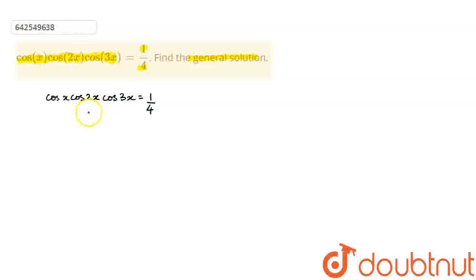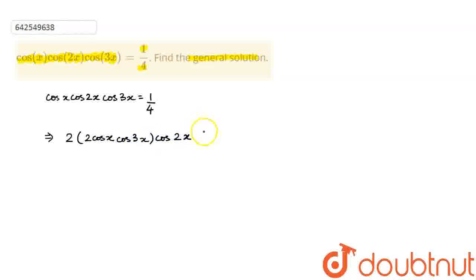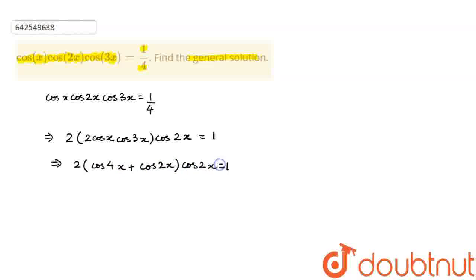So if I club cos x and cos 3x, this implies 2 into 2 cos x cos 3x into cos 2x is equal to 1. I can write this as 2 into (cos 4x + cos 2x) into cos 2x is equal to 1, using the product-to-sum formula.